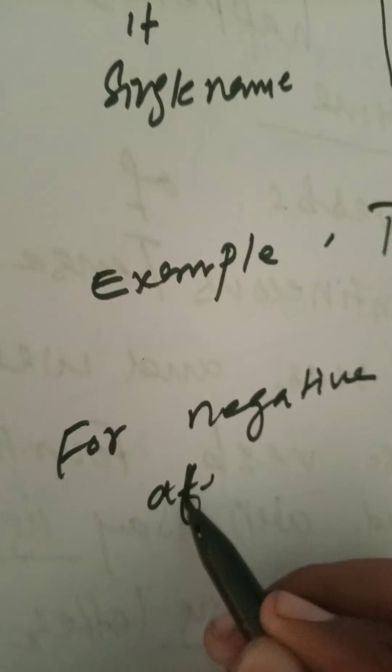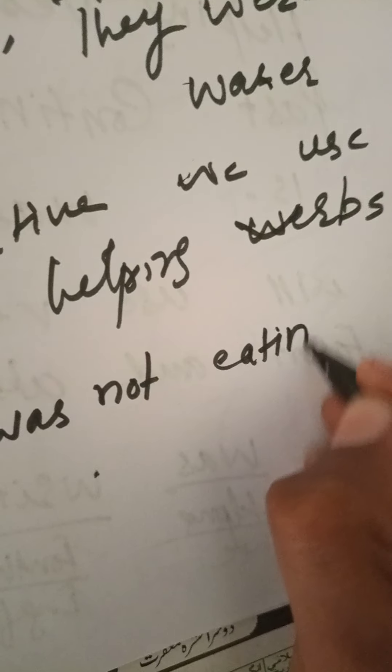For a negative sentence, we use 'not' after the helping verb. For example: I was not eating meal.